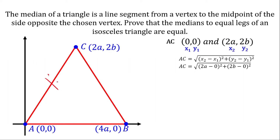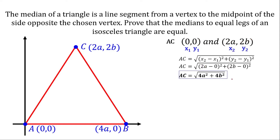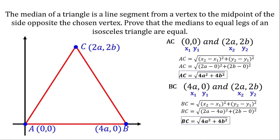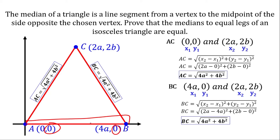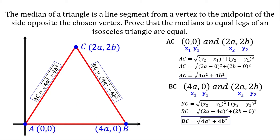Now let's first prove that this is an isosceles triangle by checking if the two sides are equal. Measuring the first side using the distance formula with point 1 and point 2: substituting 2B minus 0 and simplifying gives us the measure. Doing the same on the other side with coordinates 4A,0 and 2A,2B and using the distance formula, we get the same measure as AC. So that proves this is an isosceles triangle. The base AB measures 4A minus 0 equals 4A, since it's a horizontal line.